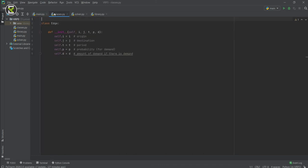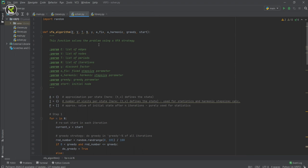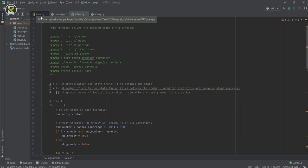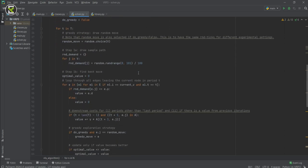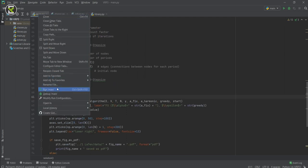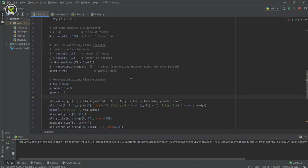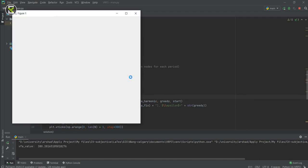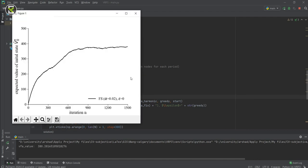In classes file, we have a class named edge and in the solver file, we have the VFA algorithm which I explained its algorithm before. It returns the approximation per state, number of visits per state, approximated value of initial state after n iterations and the VFA value. If we run this program, we get a figure that shows the number of iterations and expected value of initial state.